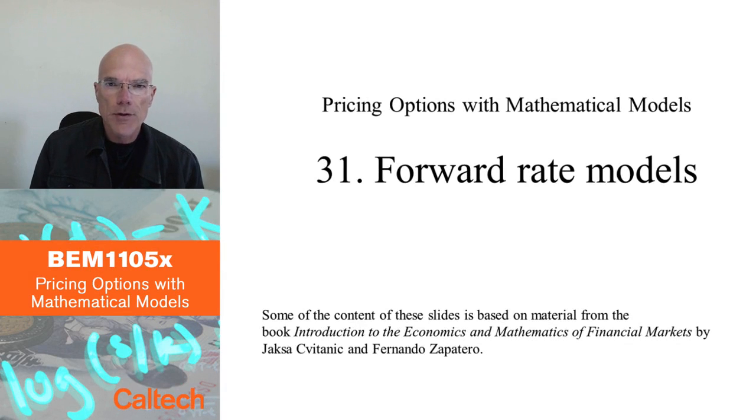We now go to the next generation of models for fixed income markets and bonds. These are models of forward rates. This came in the late 80s, early 90s, the first of those models. We already defined forward rates before, but now we are going to model them as random processes moving in time.